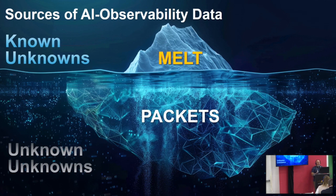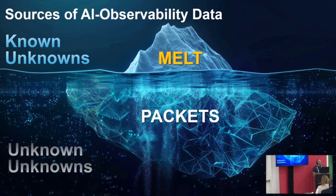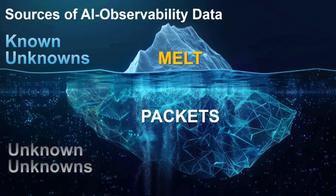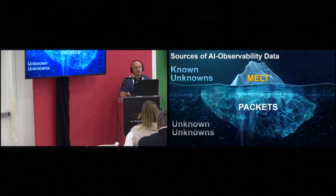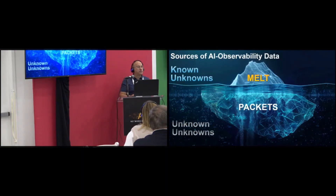The big differentiation between MELT and packets is that packets provide us with the unknown unknowns. If something happened and the developer thought about it, there will be a log and you'll have an alert. But if nobody imagined something was going to happen, there is no log. For example, if a load balancer introduced a feature that drops packets when the SNI in the handshake is missing, there's no log on the server or the load balancer — but sessions will still fail. The only way to know is by looking at the packets.